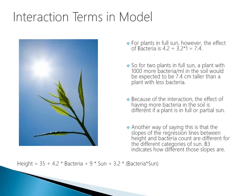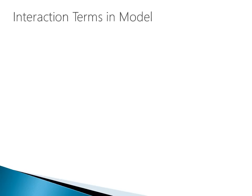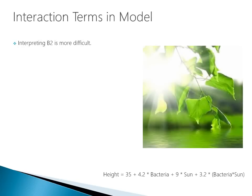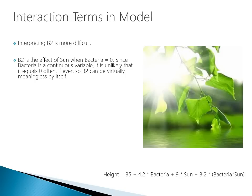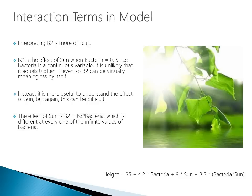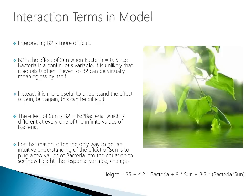Beta three indicates how different the slopes of the regression lines between height and bacteria count are for different sun categories. Interpreting beta two is more difficult — it represents the effect of sun when bacteria equals zero. Since bacteria is continuous and unlikely to equal zero, beta two can be virtually meaningless by itself. The effect of sun is beta two plus beta three times bacteria, which is different at every value of bacteria. Often the only way to get an intuitive understanding is to plug in a few values of bacteria into the equation and observe how height changes.